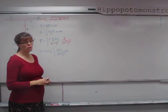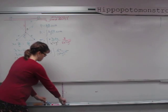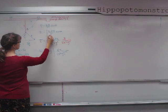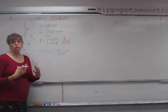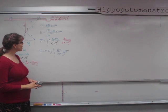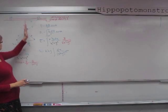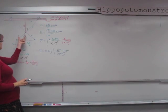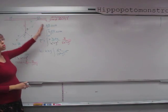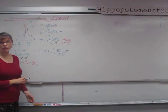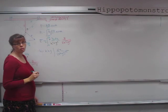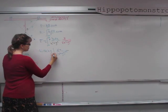It's an infinitely long wire, so we could integrate from negative infinity to infinity. Using symmetry, we can instead go from zero to infinity and multiply by two, which accounts for all the y-components. So our limits are 2 times the integral from zero to infinity.